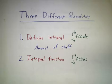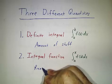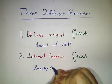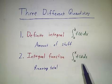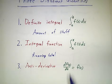The second thing is what we're calling an integral function. This is a running total. It's a total amount of stuff from a to x. And the third thing is an antiderivative, a function whose derivative is f.